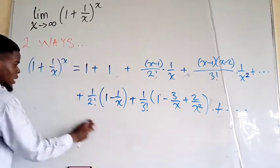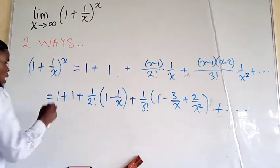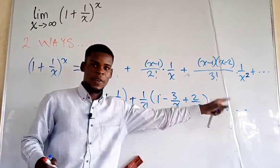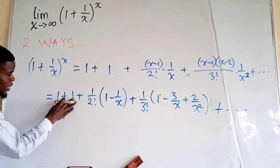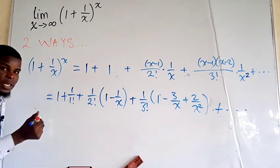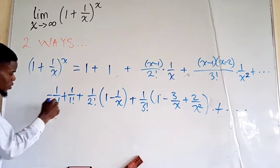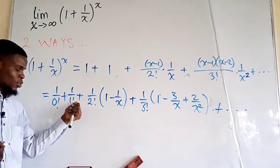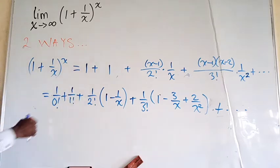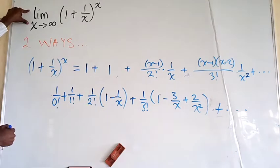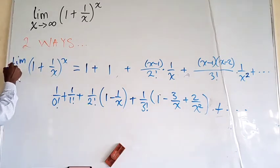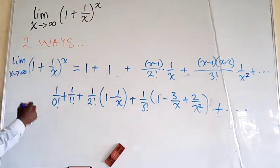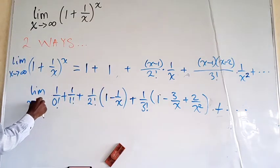We observe that the denominators follow the factorial pattern: 2!, 3!, 4!, … and we can rewrite the leading '1' terms as 1/0! and 1/1! to fit the same pattern. So now let's take the limit of the entire right-hand side as x tends to infinity.